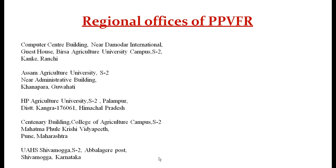These are the regional offices of the PPVFR authority: Computer Center Building near Damodar International Guest House, Birsa Agricultural University campus, Kanke, Ranchi; Assam Agricultural University near Arunachal Building, Khanapara, Guwahati; Agriculture University Himachal Pradesh, Palampur, district Kangra; college of agriculture campus, MPKV, Pune, Rawet; and UHS Shivamogga, Ablagutha Post, Shivamogga, Karnataka.